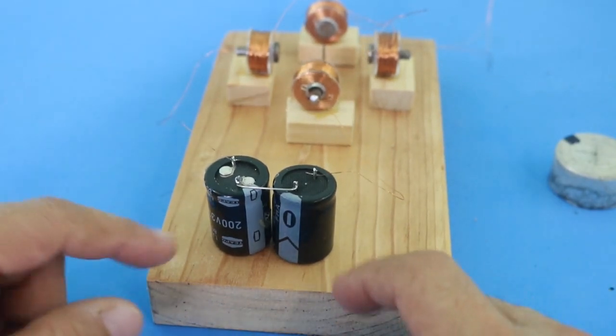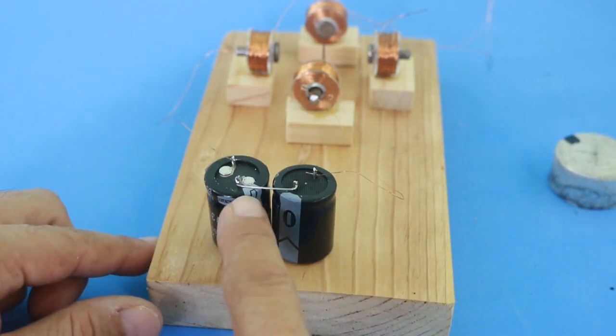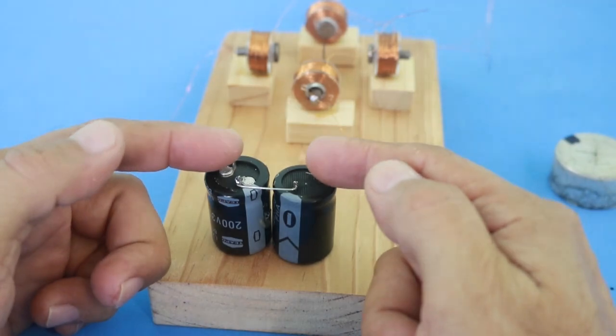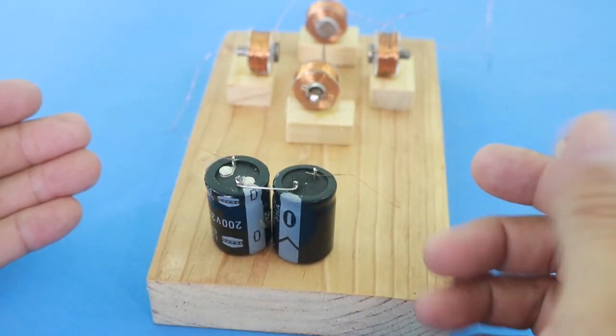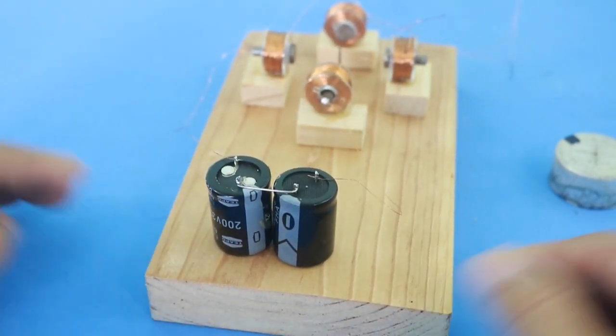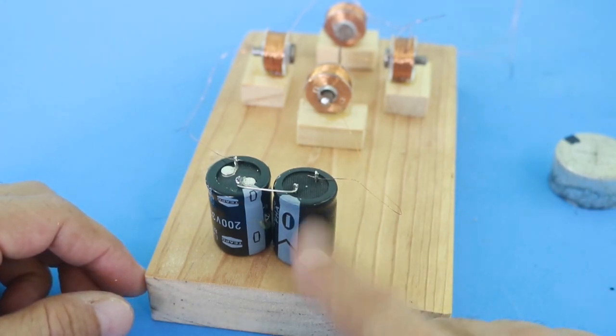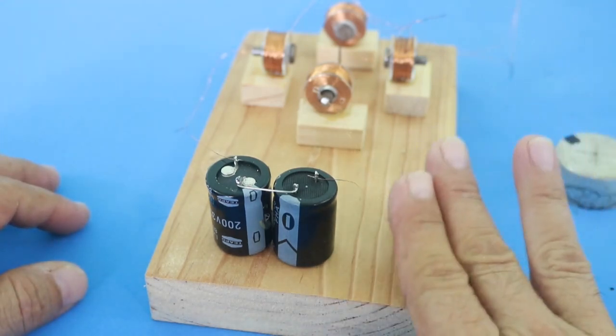So the cheap solution is to connect two electrolytic capacitors with the negatives together and the two positives are here, and in this way the capacitor can withstand the AC current. It is convenient that your capacitors have a rated voltage of at least double the voltage that you will apply to the motor.